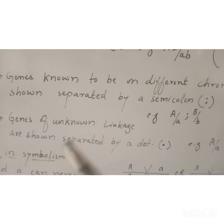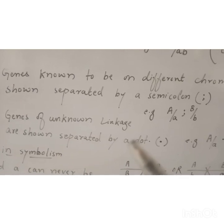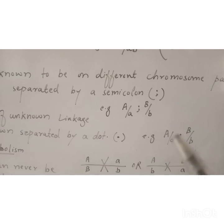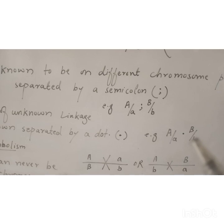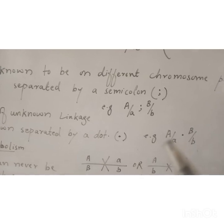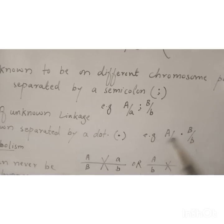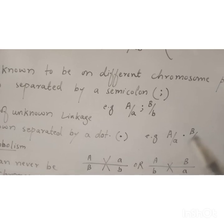If genes of unknown linkage are present, they are shown separated by a dot. If the linkage between two genes is unknown, they are represented with dots. For example, genes present on one chromosome and genes on the next chromosome, where the linkage between these two genes is unknown, are represented as a dot.